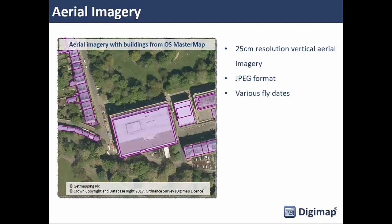A really good dataset for 3D modeling is the new aerial imagery available from the Aerial Digimap collection, launched last year. It's 25-centimeter resolution aerial imagery from a company called GetMapping — the largest and most detailed aerial imagery available for the whole of Great Britain. It's provided in JPEG format, which most CAD applications can use, and you can drape it over terrain surfaces to create realistic 3D models. The most up-to-date data is from 2015, covering around 30–35% of the country, and we update it as we receive new data from GetMapping.